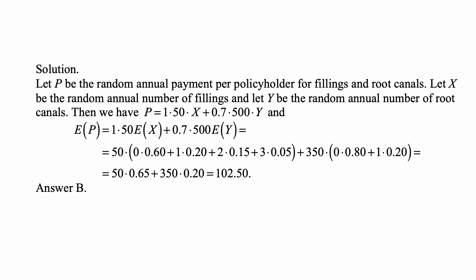Here's the solution. Let P be the random annual payment per policyholder for fillings and root canals. Let X be the random annual number of fillings and let Y be the random annual number of root canals. We have P equal to 1 times 50 — which stands for 100% of 50, the payment for a filling — times X, the random number of fillings.